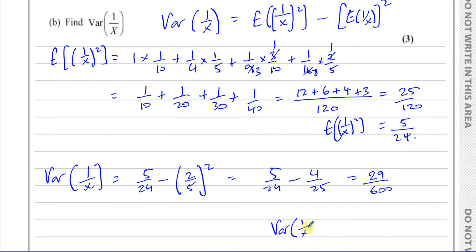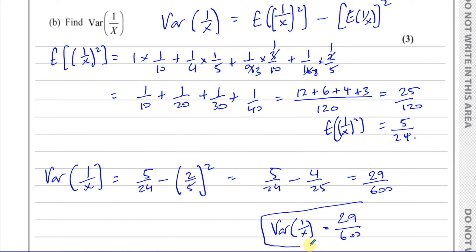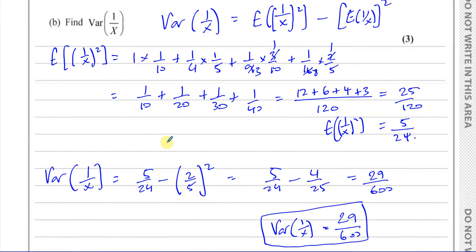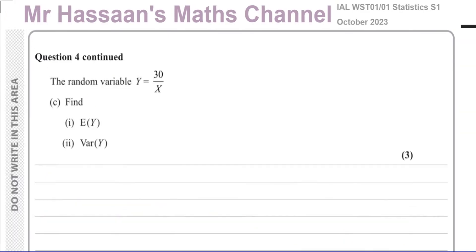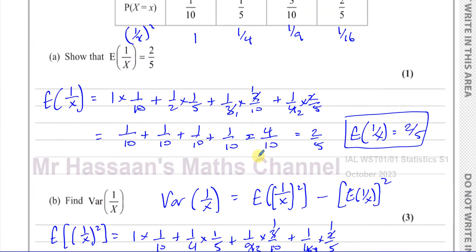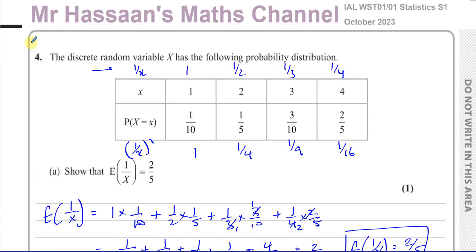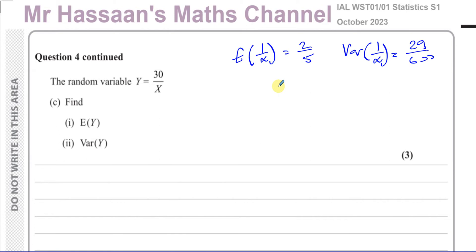So there is the variance of 1/X = 29/600 for part B, and 2/5 for part A. Now for part C: the random variable Y = 30/X. We need to find the expected value of Y and the variance of Y. We already know E(1/X) = 2/5 and Var(1/X) = 29/600, and we'll use our understanding of linear transformations of random variables.